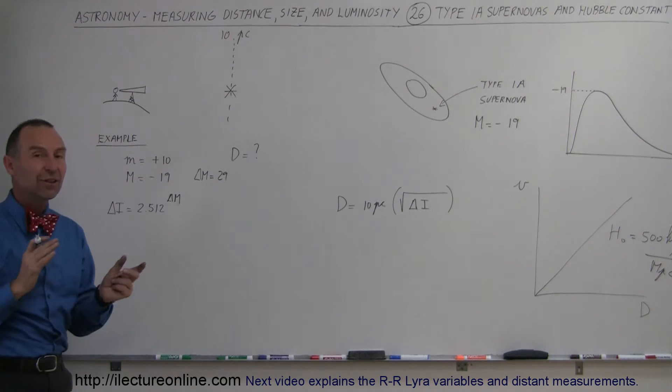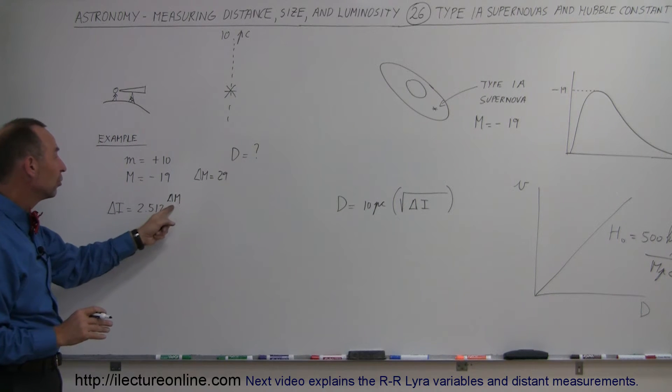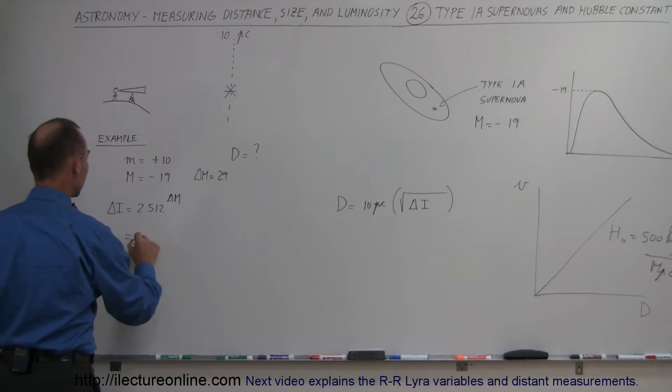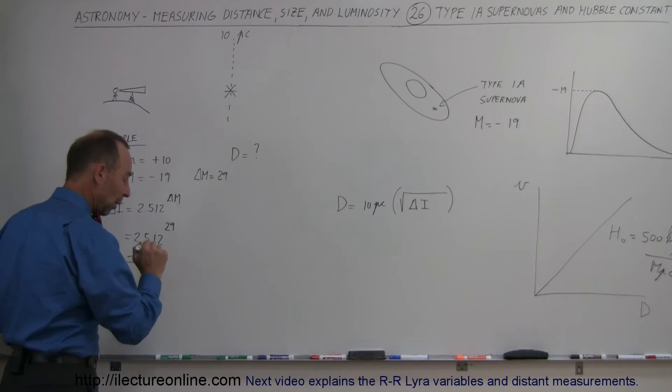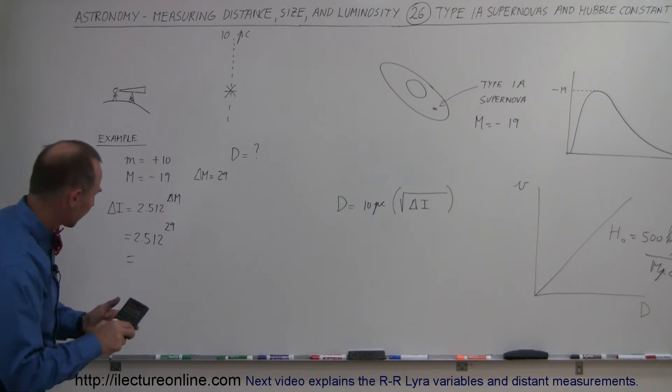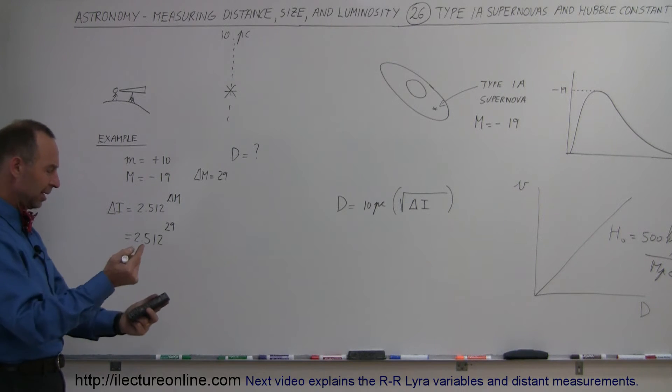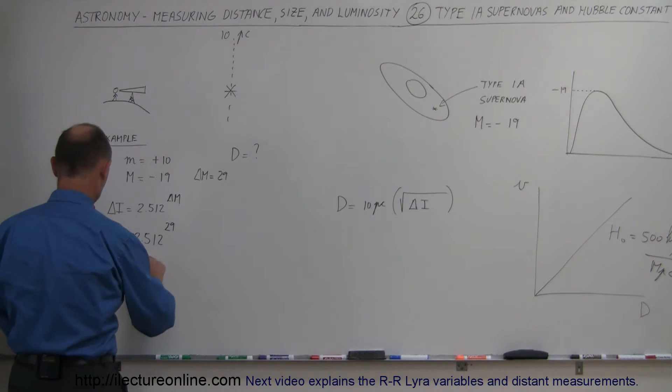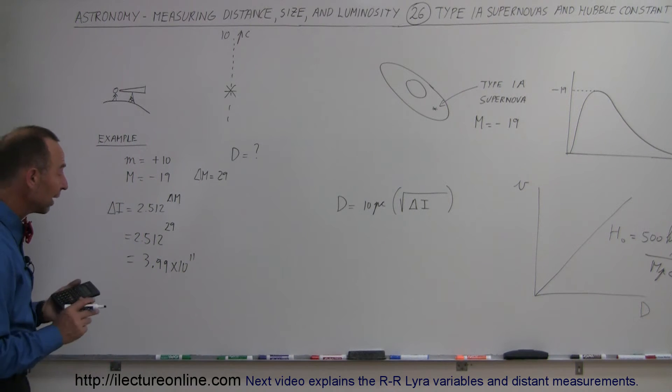So, then to find the difference in intensity, we take 2.512, raise it to the 29 power. So, this is equal to 2.512 raised to the 29 power. And when we do that, let's see what we get. 2.512 raised to the 29 power, and we get 3.99 times 10 to the 11th. Big number.